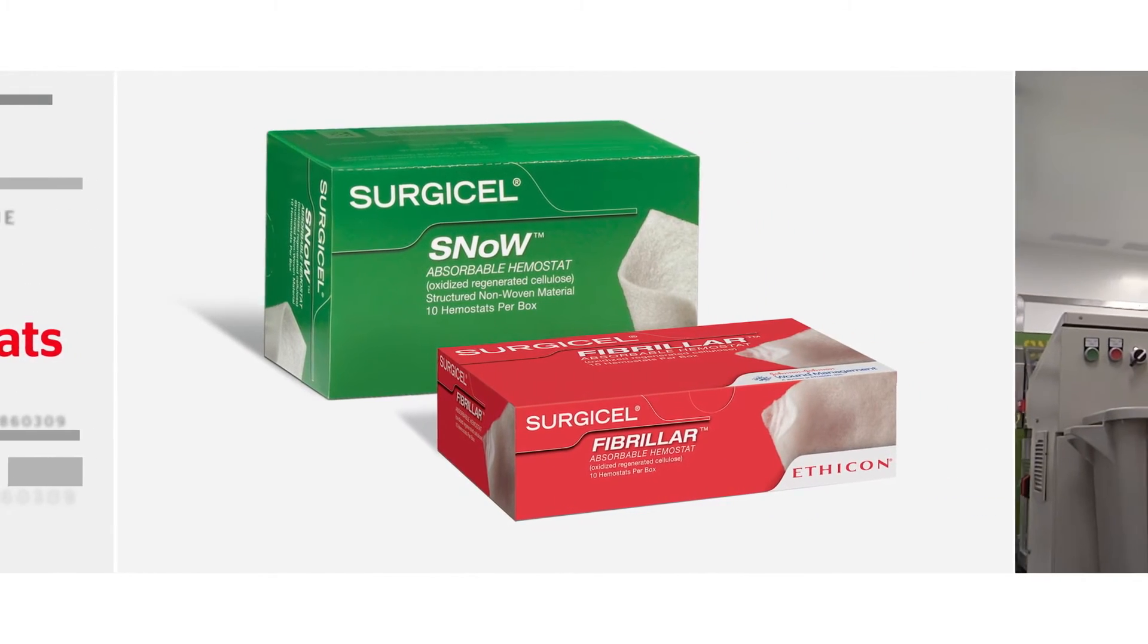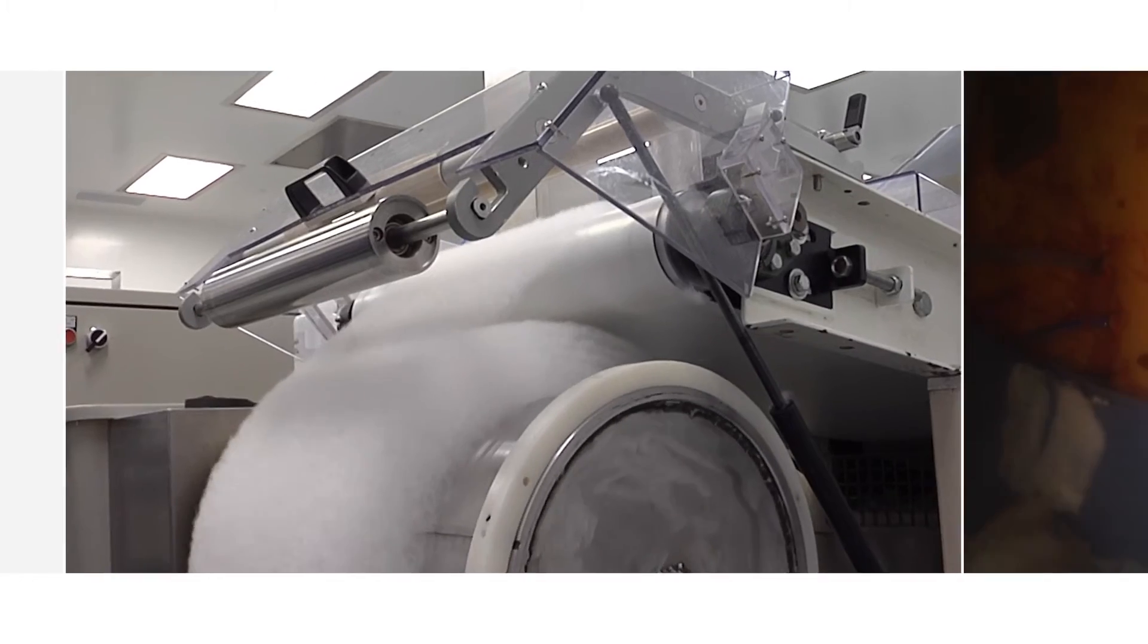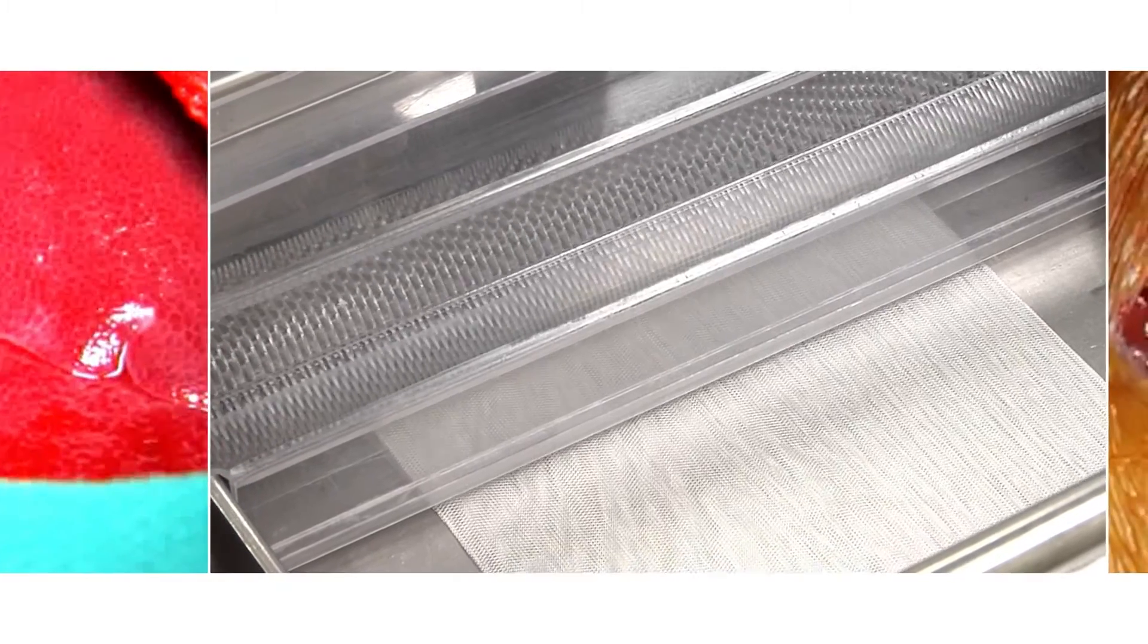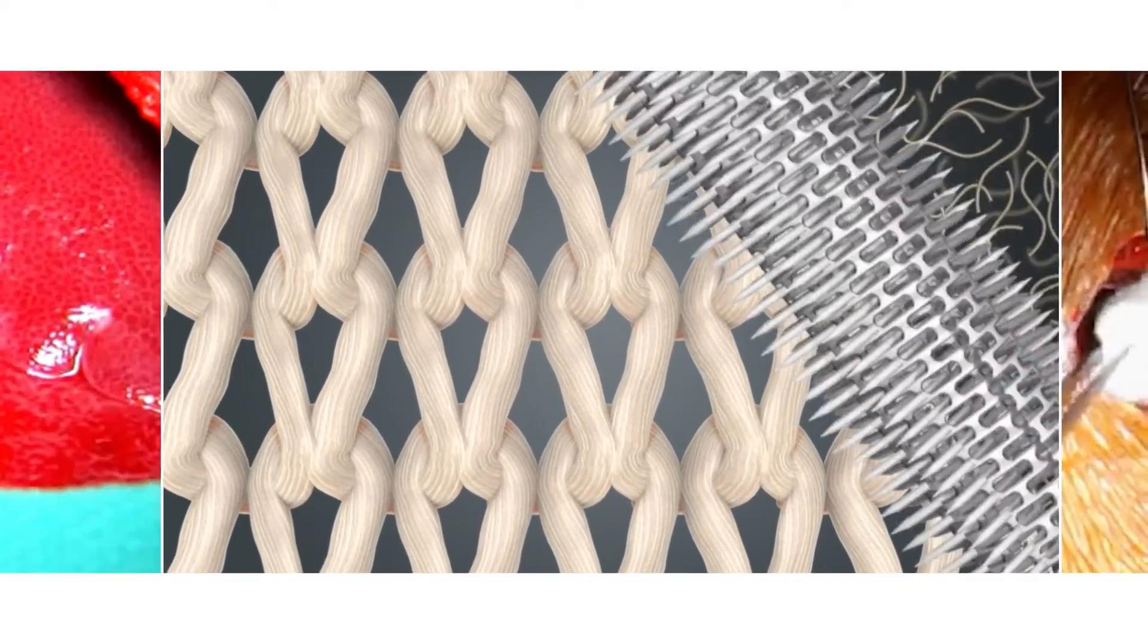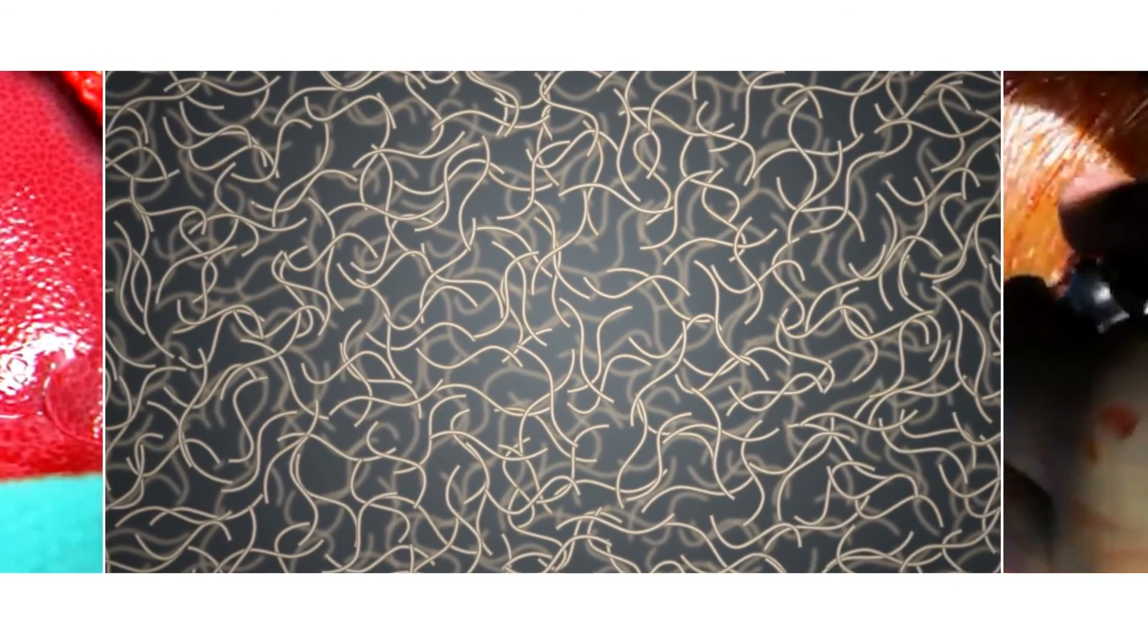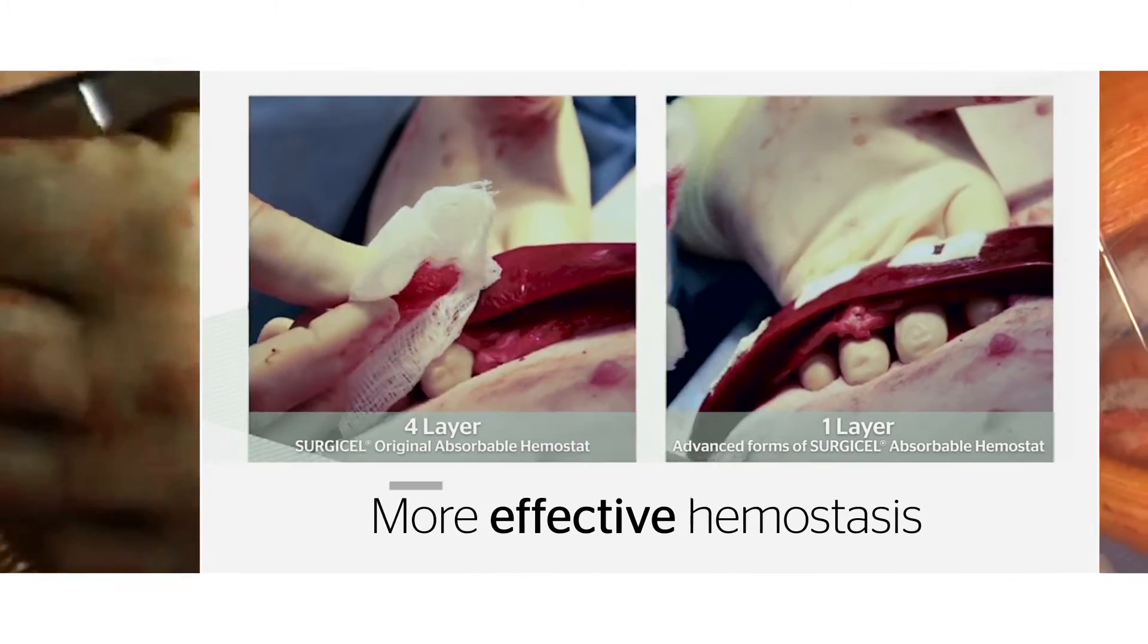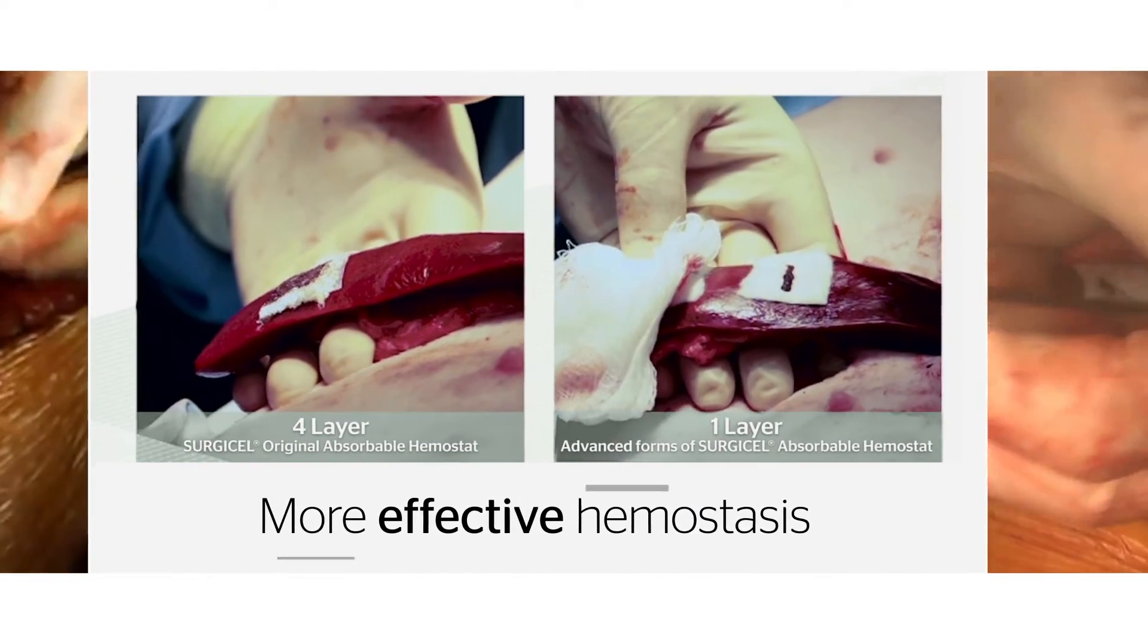Surgicel Snow and Surgicel Fibrillar are specially processed to increase hemostatic capacity and improve handling compared to Surgicel Original. First, Surgicel Original is broken down into individual ORC fibers. These fibers are then used to create non-woven materials with substantially more ORC per unit area. With more ORC available to affect hemostasis, just one layer of Surgicel Snow or Surgicel Fibrillar is more effective than four layers of Surgicel Original.